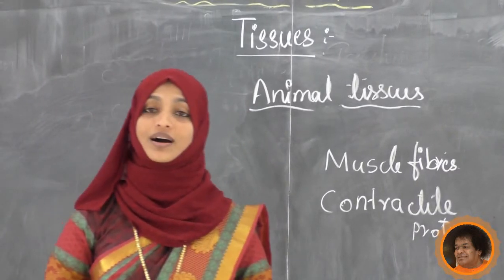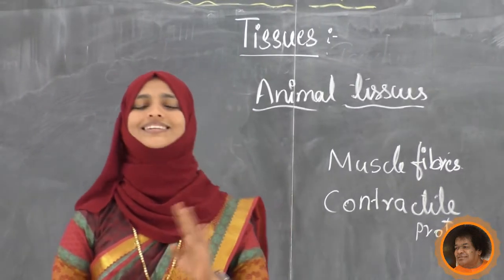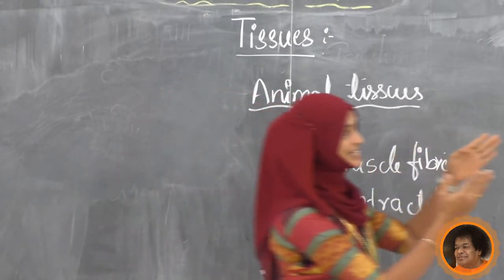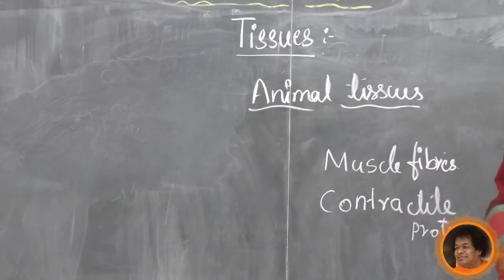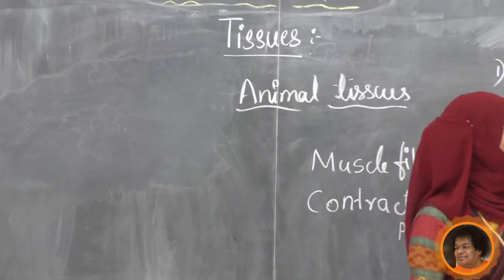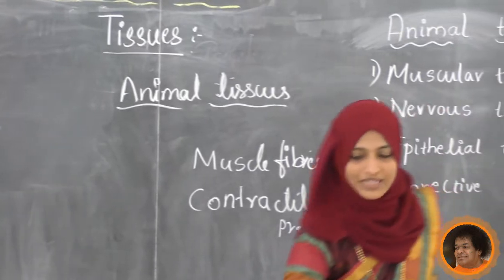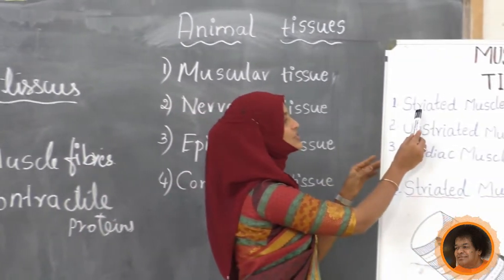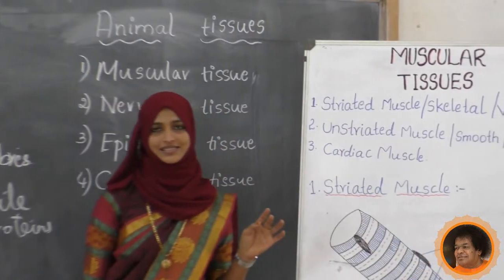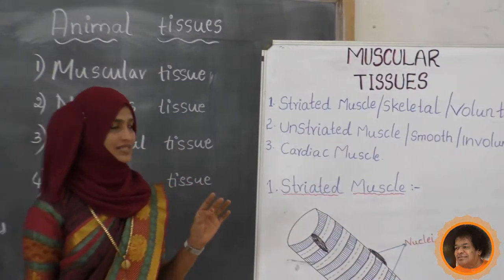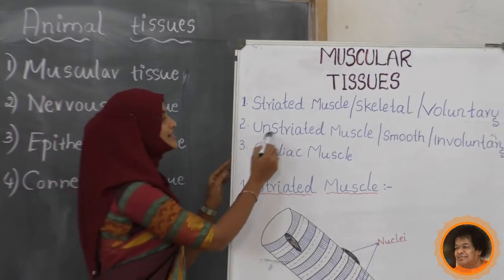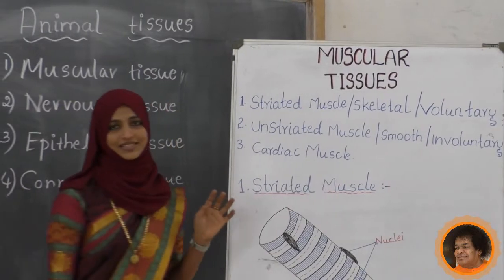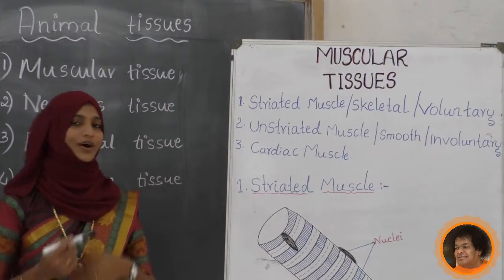This is about muscular tissue. Muscle tissues are further classified into three types. First one is striated muscles, second one is unstriated muscle, and third one is cardiac muscle. We will study one by one.